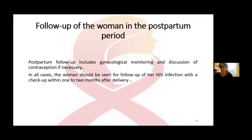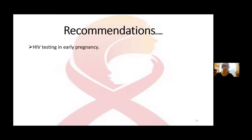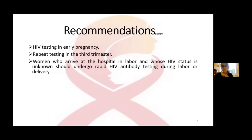Recommendations for newborns exposed to HIV perinatally: There is compelling evidence that mother-to-child transmission of HIV can be reduced and almost eliminated by screening for infection during pregnancy, appropriate perinatal anti-retroviral therapy, reduction of exposure during delivery, and avoidance of breastfeeding. For this reason, the Canadian Pediatric Society supports the following Canadian and American recommendations: HIV testing in early pregnancy, repeat testing in the third trimester, and testing for women who arrive at hospital in labor whose HIV status is unknown.